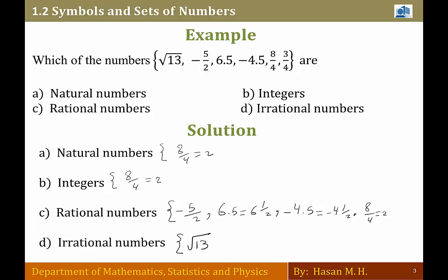Finally, 3 over 4: it is a fraction, which means it is a rational number, but it is not a natural number and it is not an integer. It is rational but not irrational.